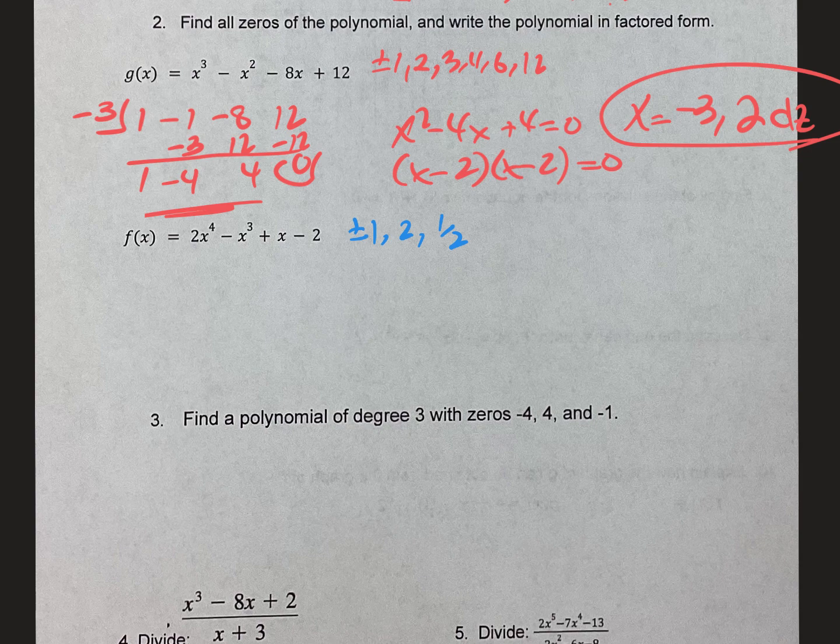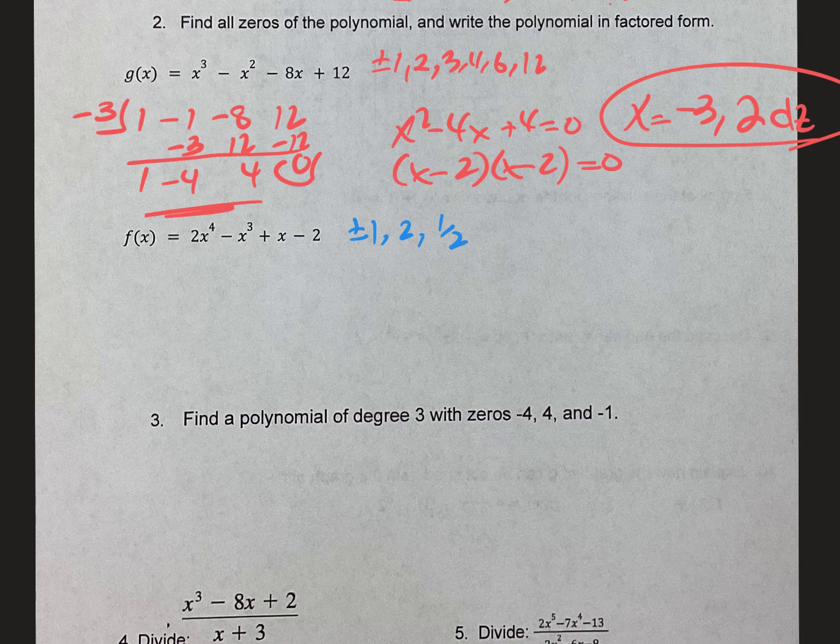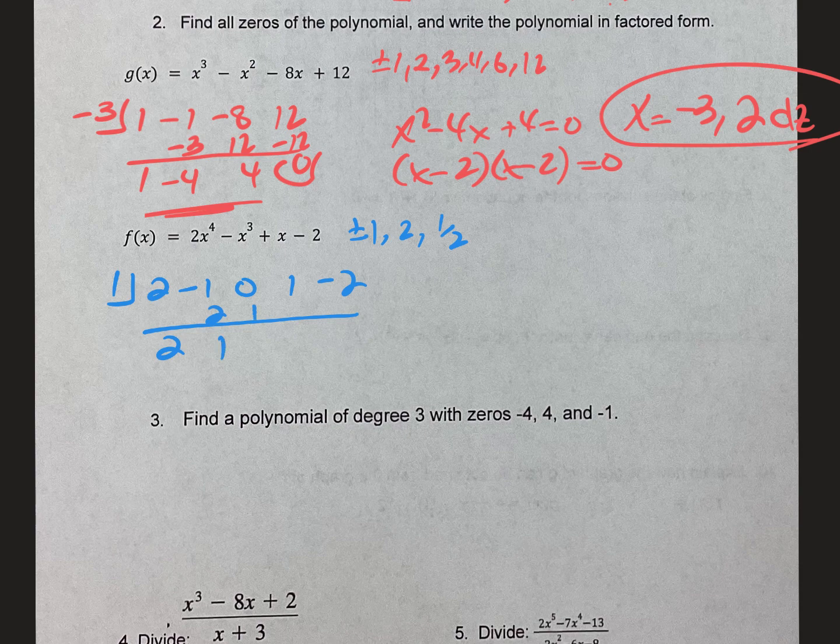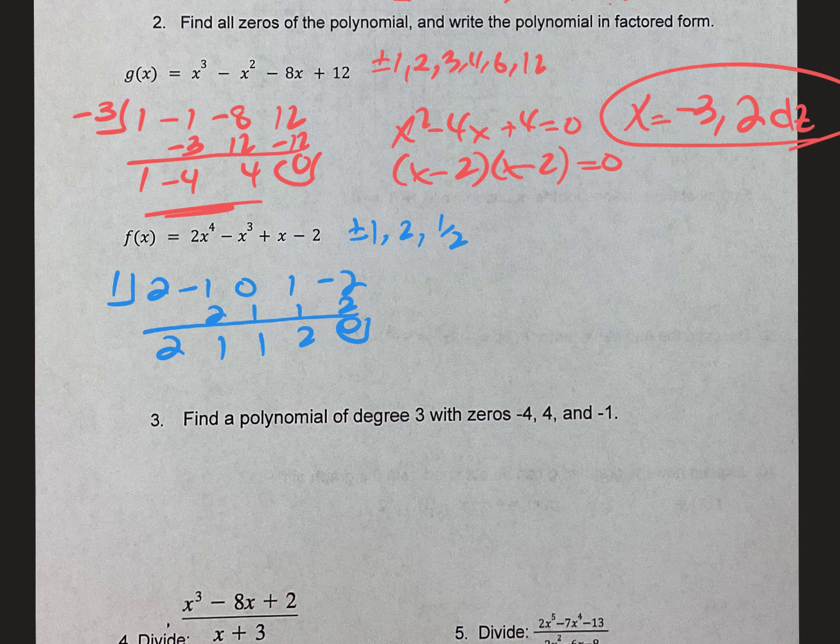I punched it in y equals and just graphed it. It looks like it crosses at 1. So I'm going to try 1 here, 2, negative 1. Don't forget your 0, it's missing that x squared term. Bring down the 2, 1 times 2 is 2, add, multiply, add, multiply, add, multiply. Sure enough it works. This will be with four terms. It also looks like it crosses at negative 1, so I'm going to try negative 1 here.